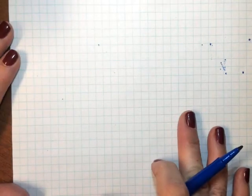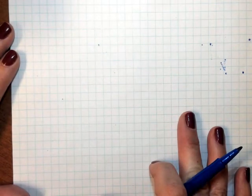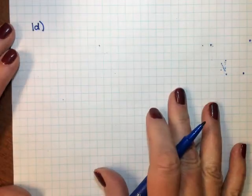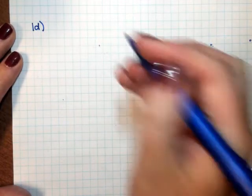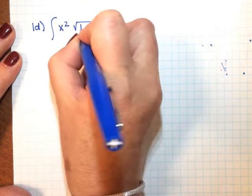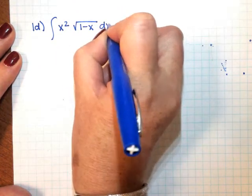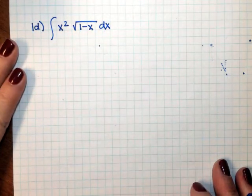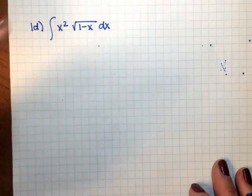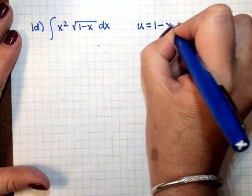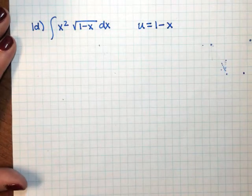To finish up some of the questions from the 6869 notes, let's take a look at example 1D on page 1. Example 1D has the integral of x squared times the square root of 1 minus x dx. When you're trying to do a u substitution, look inside the radical — the problem tells you to let u be equal to 1 minus x. So they're giving that to us.